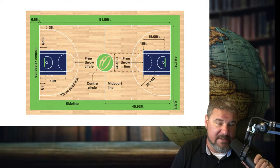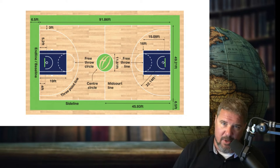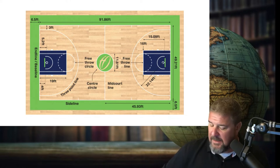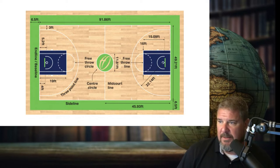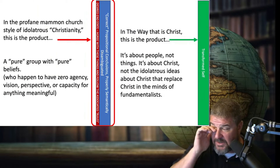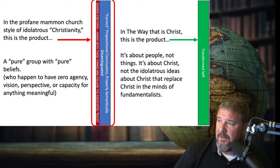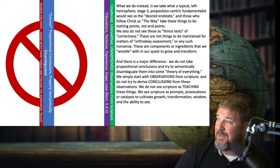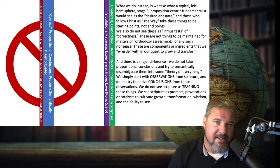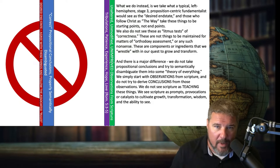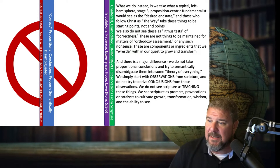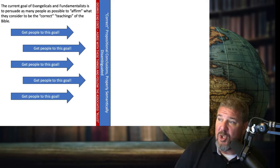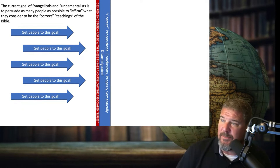You could actually play the game well without knowing some of the things. If you get the flow of it, you understand it. You see the line on the court — I don't need to know the specification necessarily. What I'm trying to tell you is that this fundamentalist orthodoxy, baby Christianity, profane idolatrous Mammon Church nonsense — thinking you're going to hold somebody's feet to the fire because they don't believe the things — no. We just take the things to be the starting point, not the end point. The problem with fundamentalism is they treat all the things you're supposed to believe like the end point. So if we go back to these slides: the goal of evangelicals and fundamentalists is to persuade as many people as possible to affirm what they consider to be the correct teachings of the Bible.